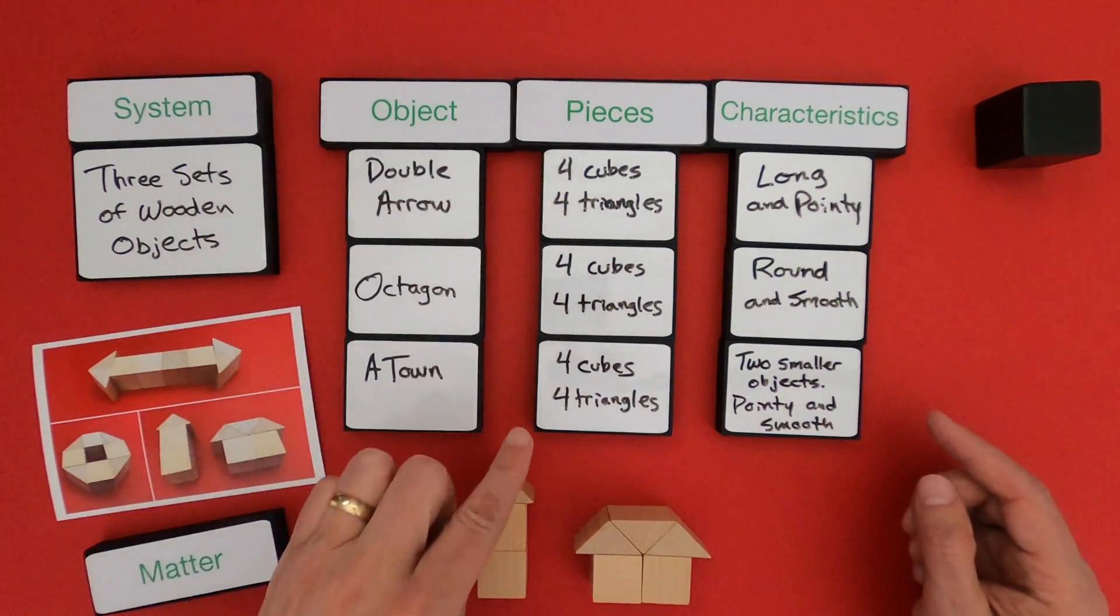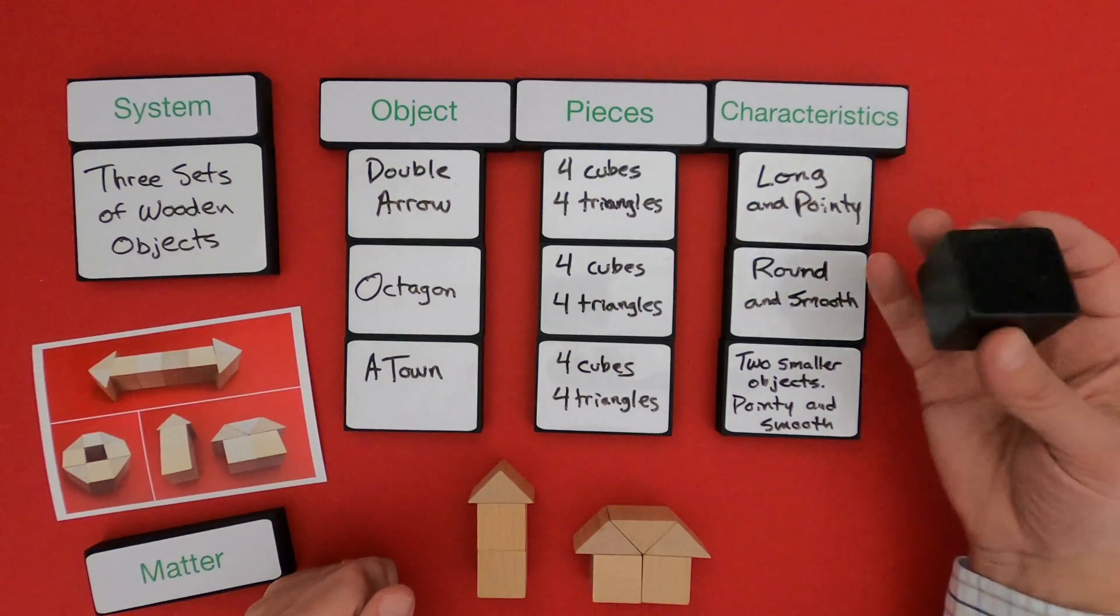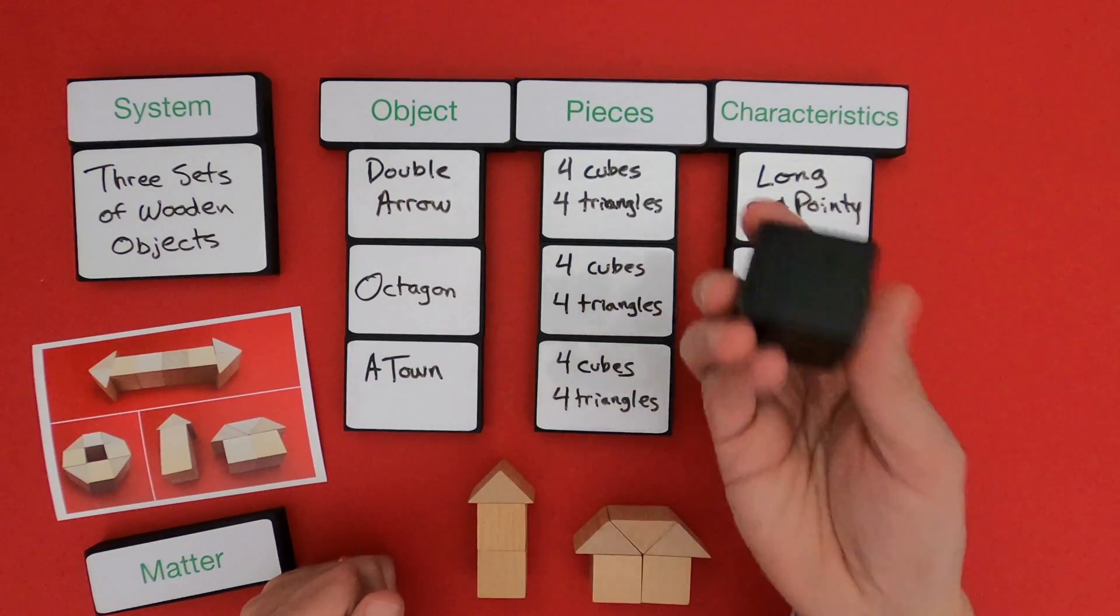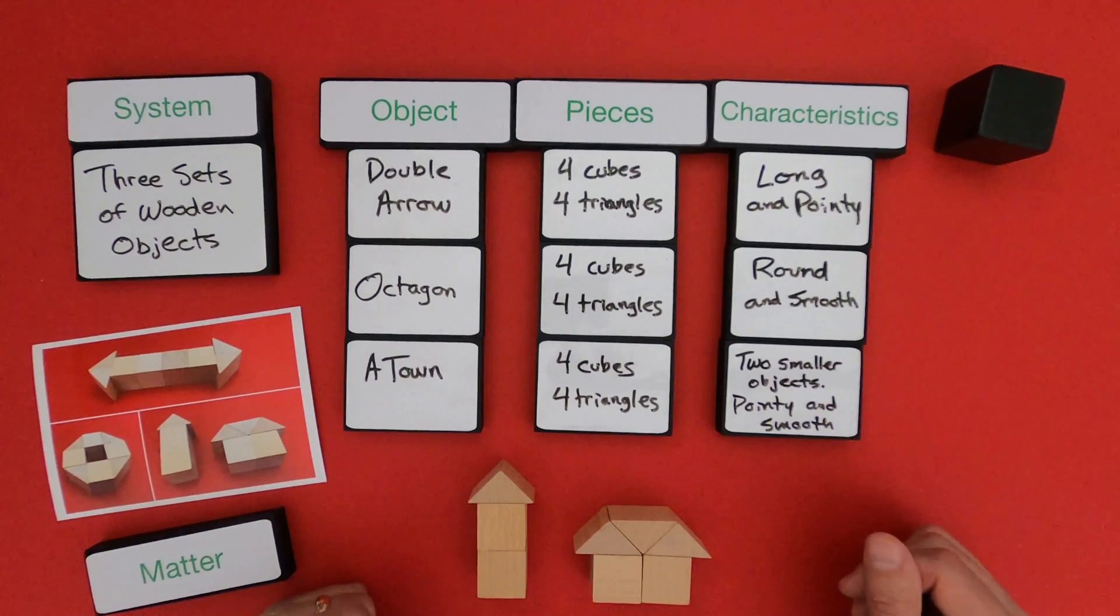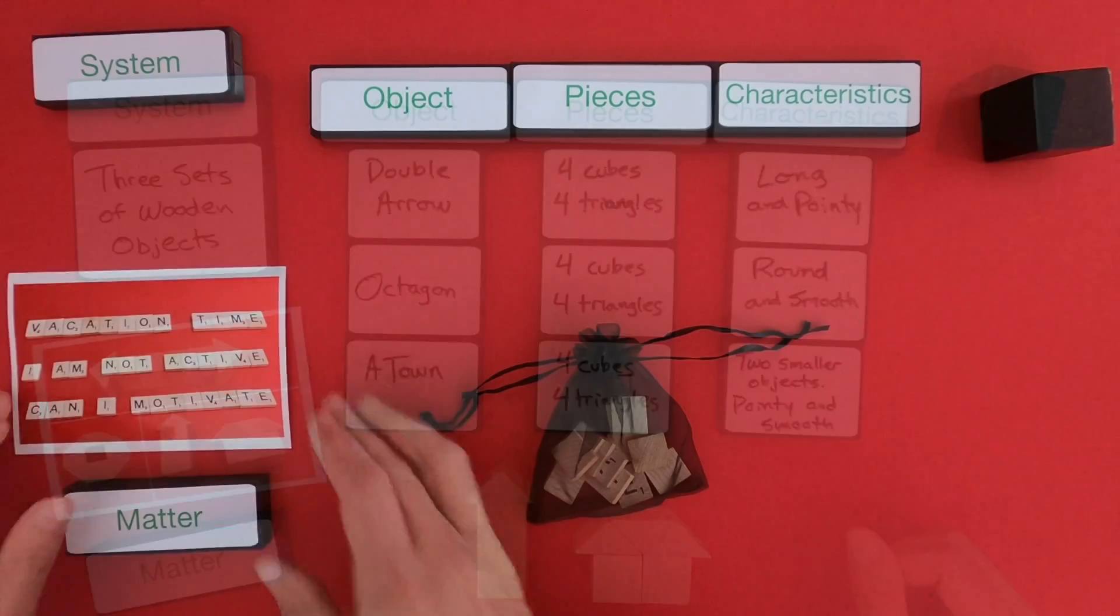So you can see that as I go through this, the same number of pieces are used to make multiple different types of objects. This will be really important as we start to look at matter and how matter is made up of different parts. We'll eventually call those particles and atoms, but for now, I'd like to have you give this a try. What I'm going to do is I'm going to clean this off, and then I'll give you another challenge.